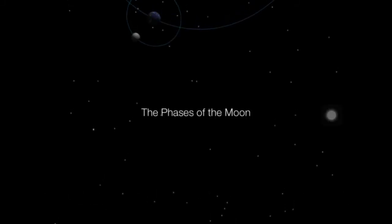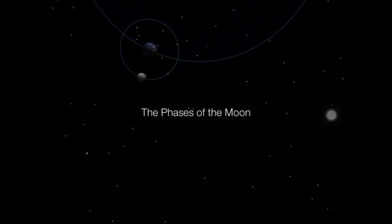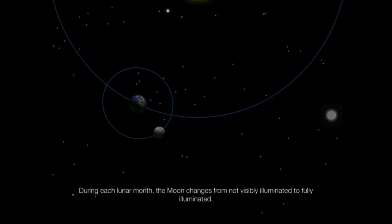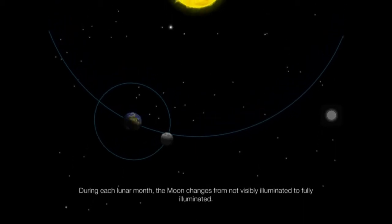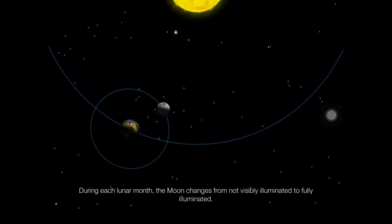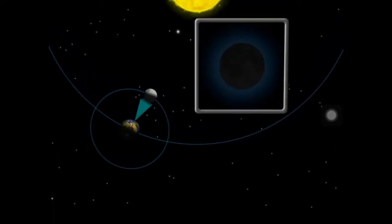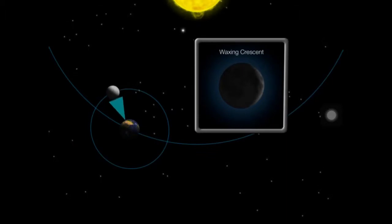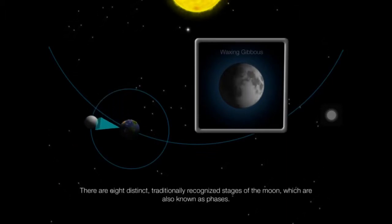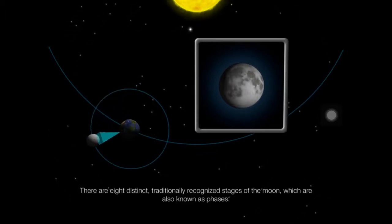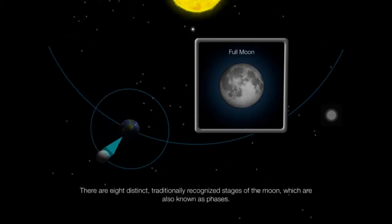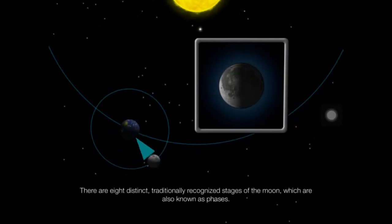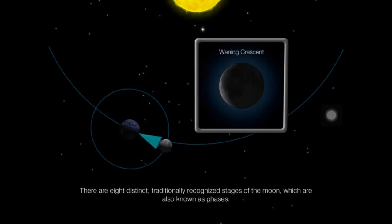The Phases of the Moon. Why does the moon look different every night? During each lunar month, the moon changes from not being visibly illuminated to being fully illuminated. There are eight distinct, traditionally recognized stages of the moon, which are also referred to as its phases.